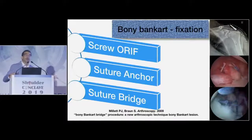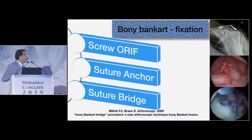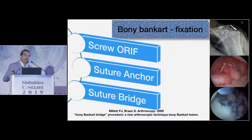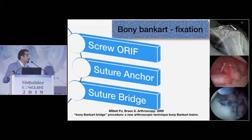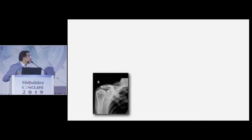Now you've seen three different types of instabilities, but within the bony Bankart patient there are three different ways to treat them. You could do a screw fixation — open or arthroscopic. You could do a conventional Bankart, get the bumper back in place. Or you could do something called a suture bridge technique, which is kind of a double row repair of the fragment and the labrum together. Peter Millett described this very elegantly and started this trend for the suture bridge technique.